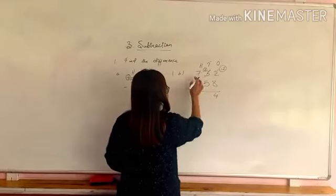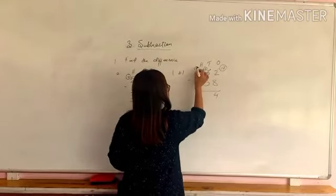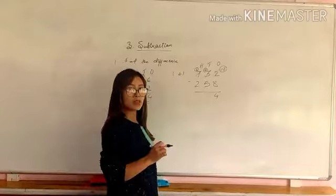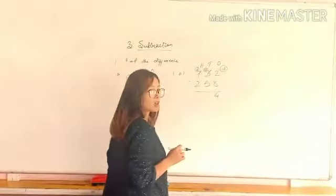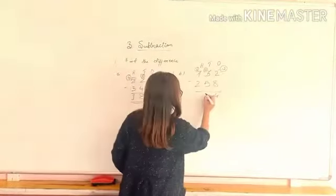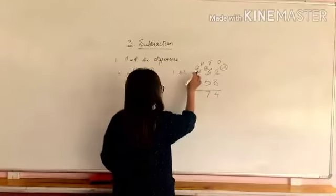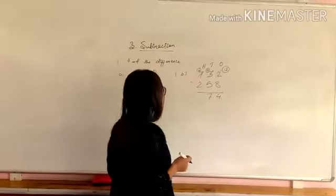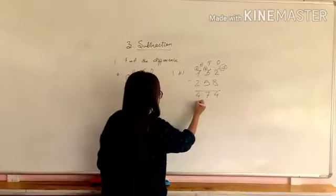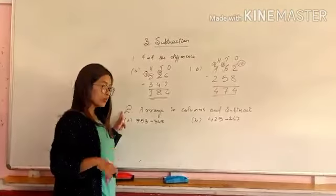2 minus 5, you cannot, so you have to borrow from here. 12, here's 6 of them. 12 minus 5, how much? 7. We've got your 7. 6 minus 2, 4. This is our second question number 2.